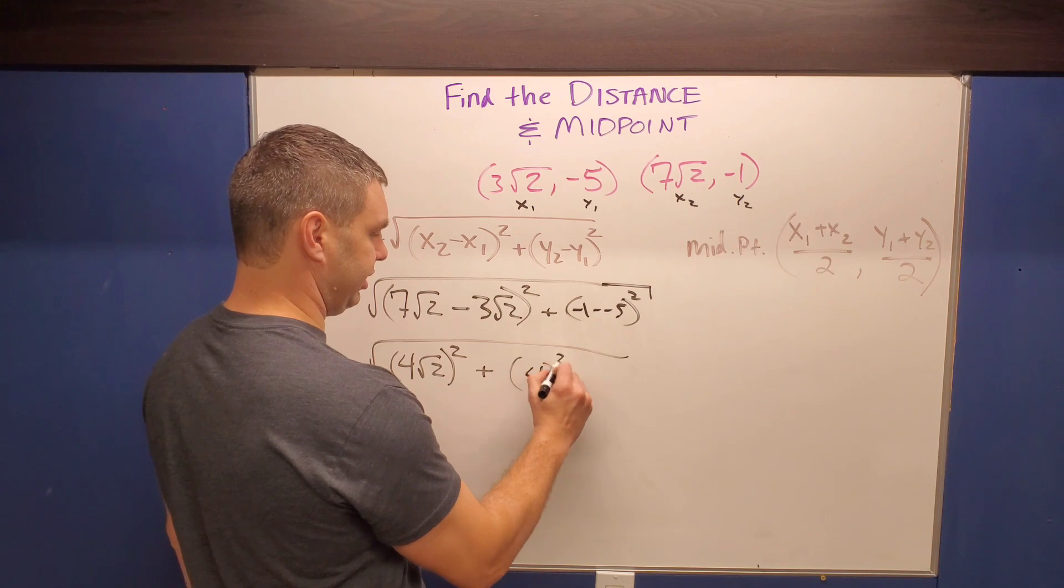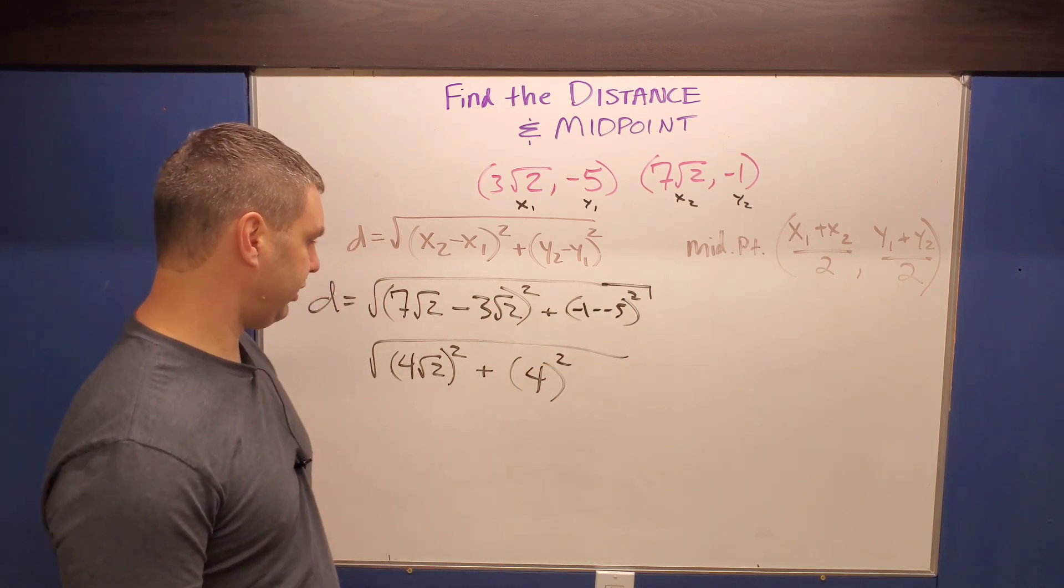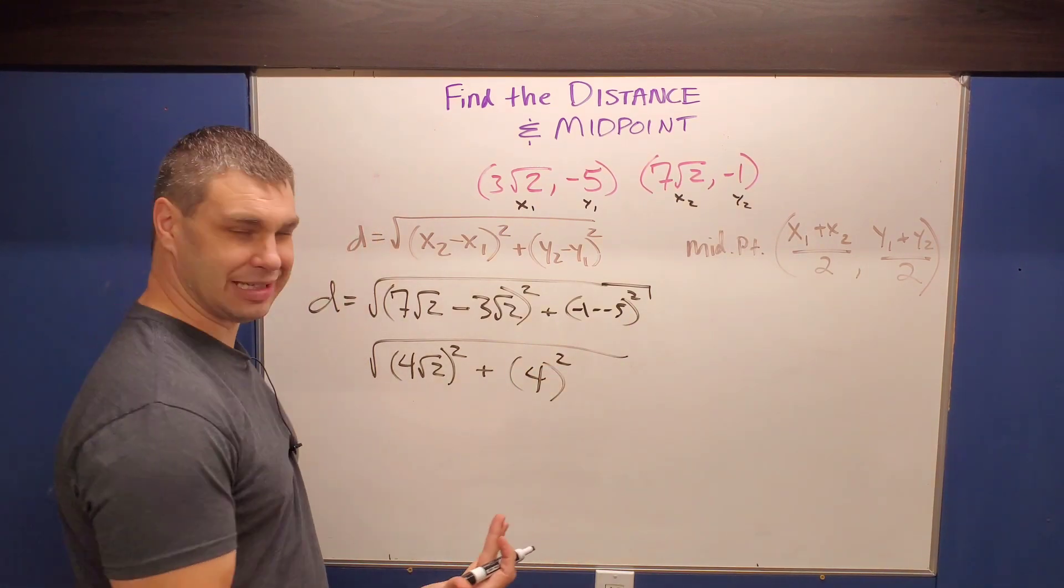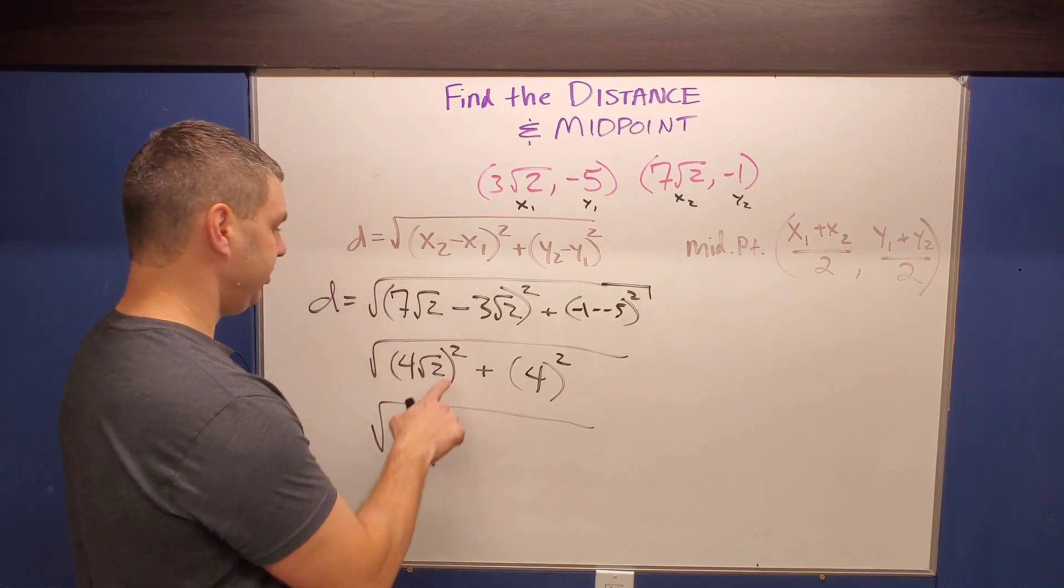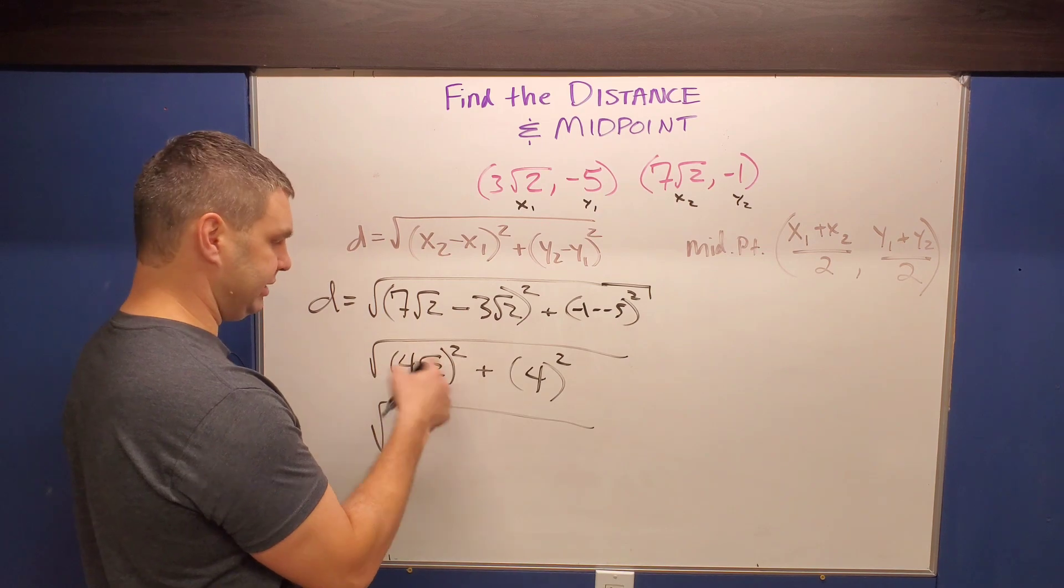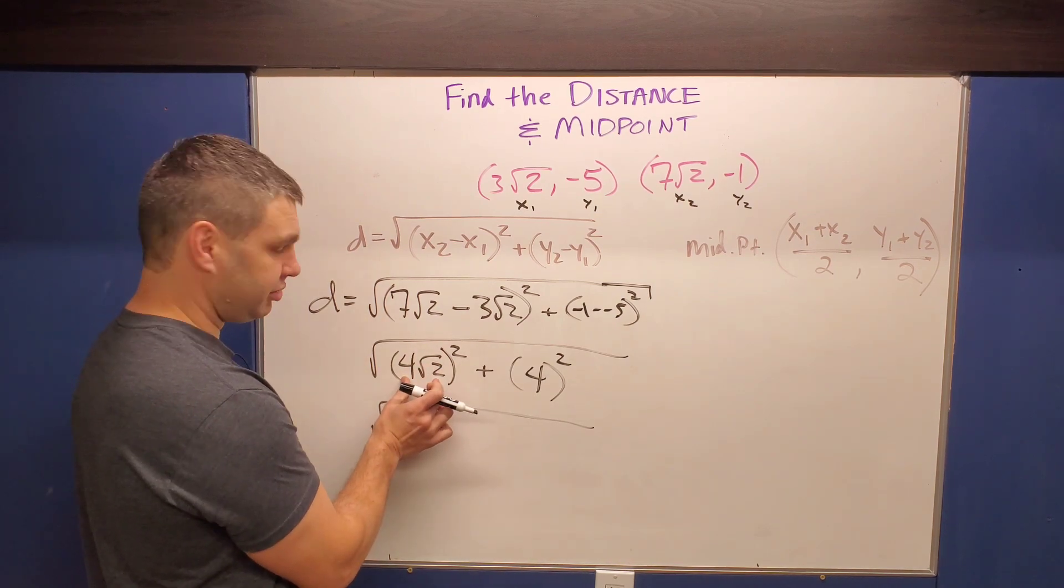So this will be four. Again, you can leave those parentheses, it doesn't really matter with the four, but you can square it like that. Okay, let's try to simplify this a little bit further. This is the part where if you're gonna make a mistake, it's probably gonna be here, because this square, remember gets applied to kind of each part on the inside of those parentheses.